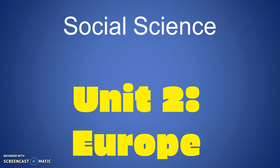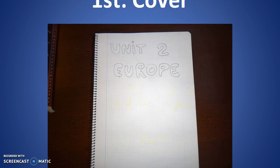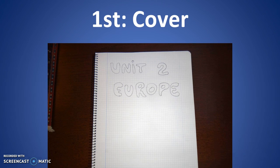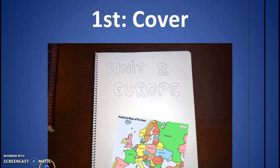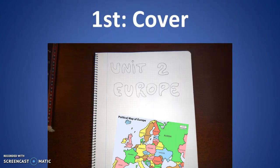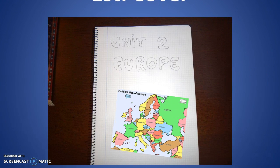As I told you this morning, we have started Unit 2 about Europe. The first thing you have to do is a cover. You will have to make a cover in your social science notebook, like this one for example, and you can also include a map.